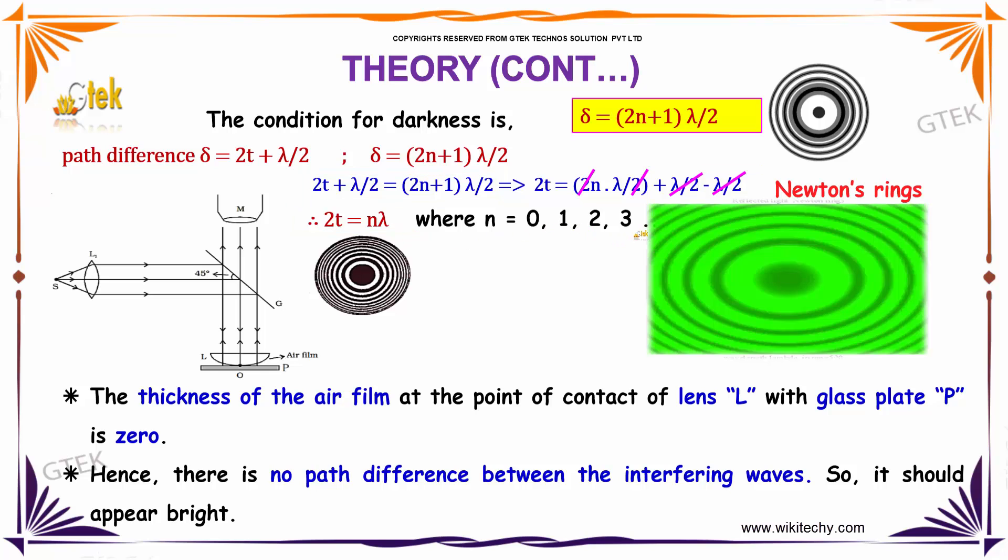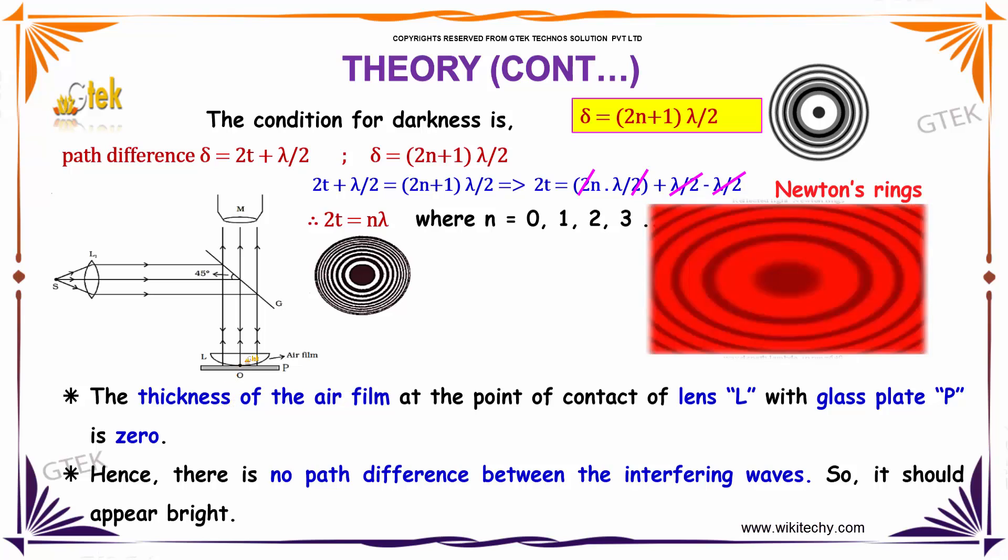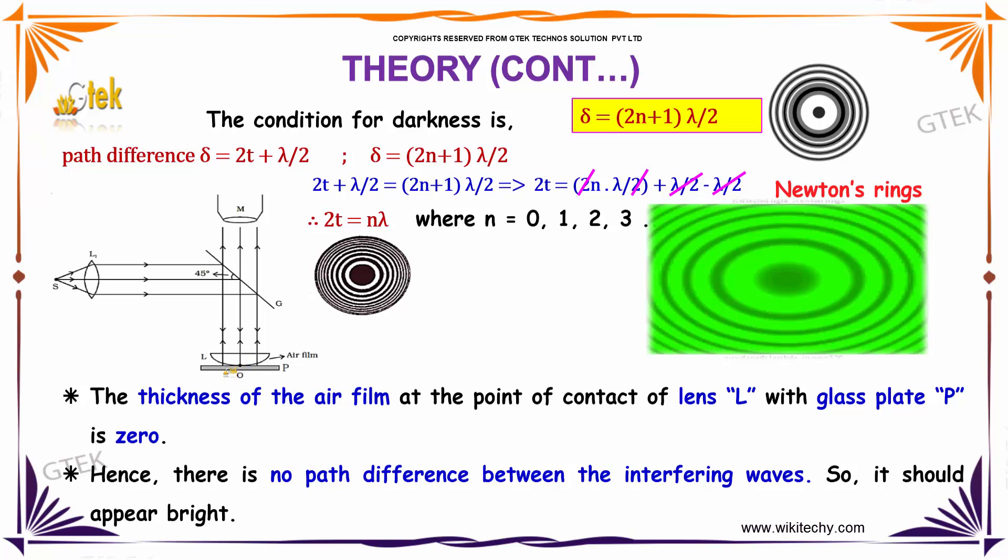Where n = 0, 1, 2, 3. The thickness of the air film at the point of contact of lens L with glass plate is zero. Hence there is no path difference between the interfering waves, so it should appear bright.